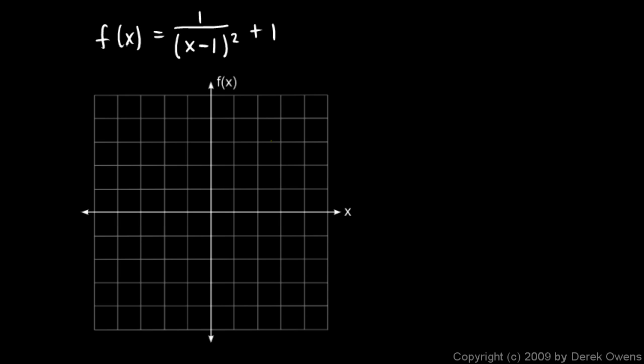Here are two more examples of functions with infinite limits. This first one, f of x, is 1 over x minus 1 squared plus 1. We can tell by looking at this that the function will have a vertical asymptote when x equals 1, because that will give us a zero denominator. So I'll draw in a dotted line at x equals 1.